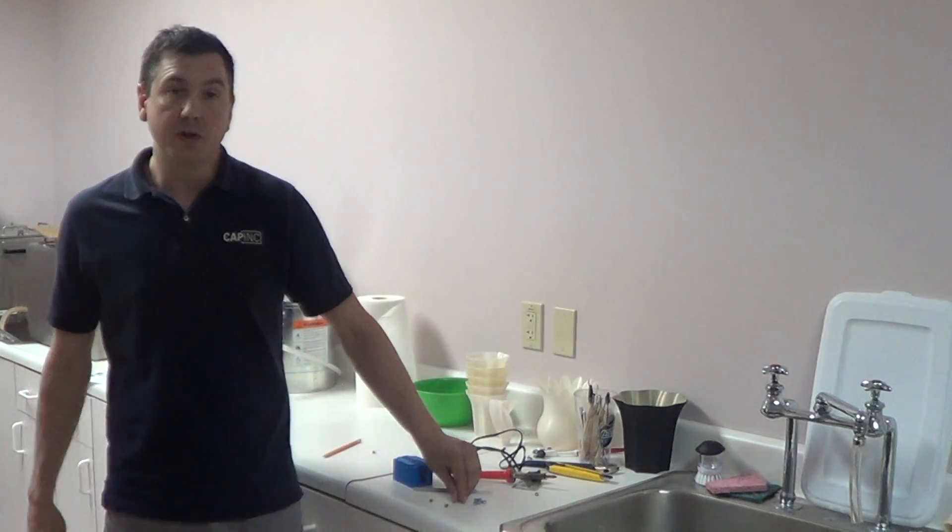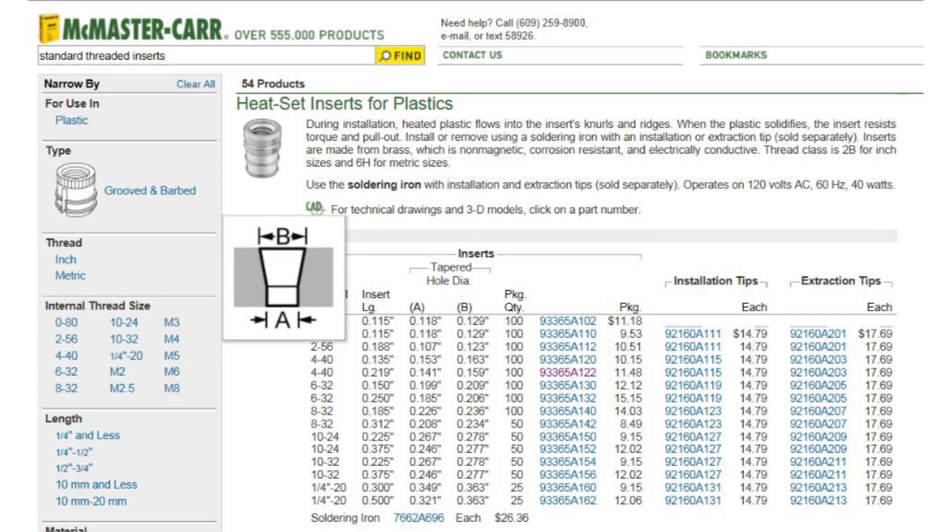First, the inserts that we use are brass inserts we get from McMaster Carr. The ones we use are called heat set inserts for plastic for our FDM parts. They'll give you the hole size for each size on the website, so you have to incorporate this when you're designing your holes in your CAD software.